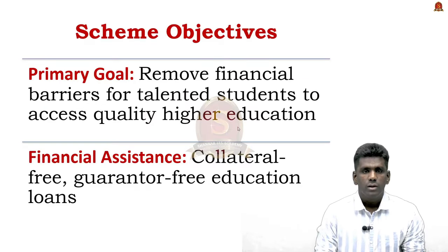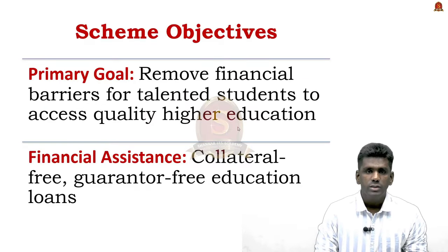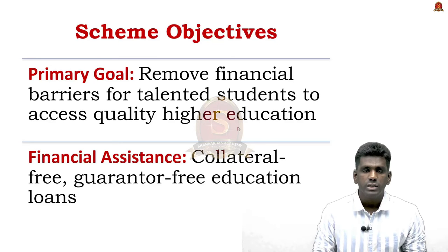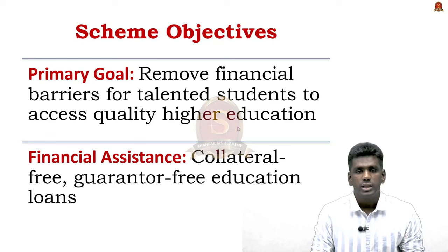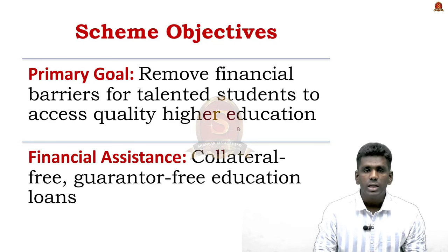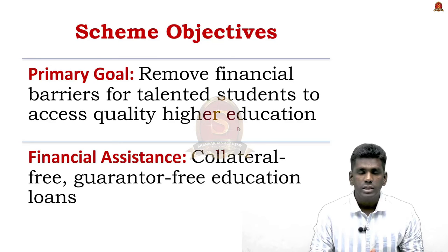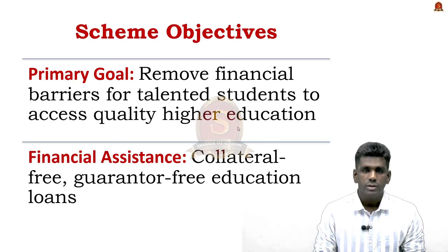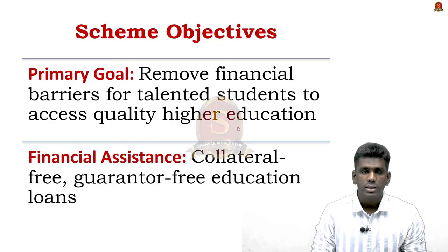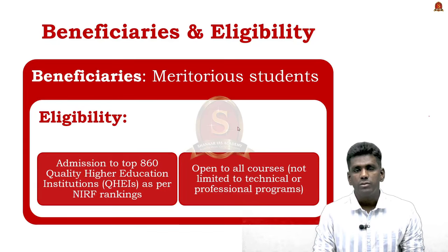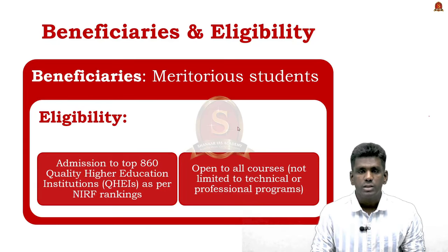The objective of the scheme is to ensure that meritorious students do not face financial barriers in accessing quality higher education. It provides financial assistance in the form of collateral-free education loans. The beneficiaries are meritorious students, and this is a central sector scheme. Eligible students are those admitted to top-ranked institutions.